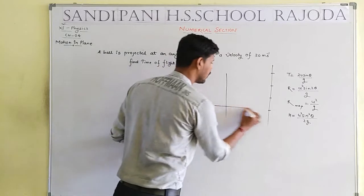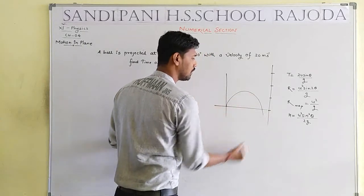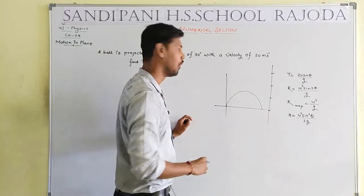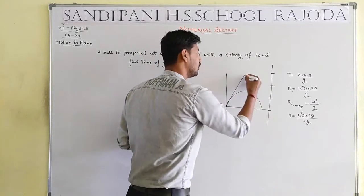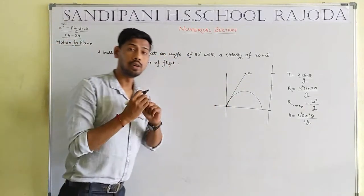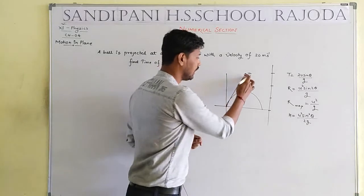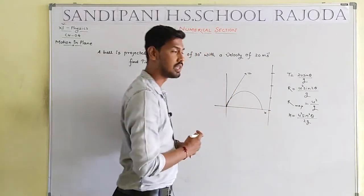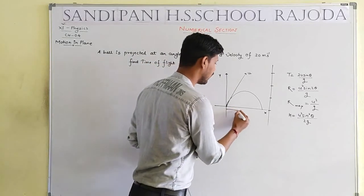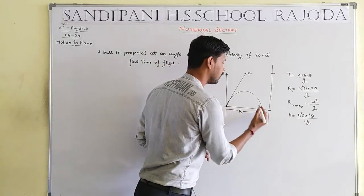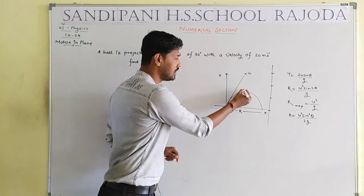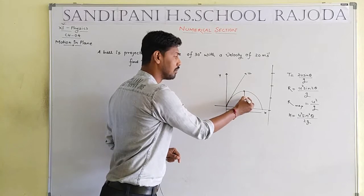In the case of projectile motion, this is the projectile path of a moving object. U represents the initial velocity. The x-axis is the horizontal axis and the y-axis is the vertical axis. Capital R represents the maximum range and this is the maximum height.